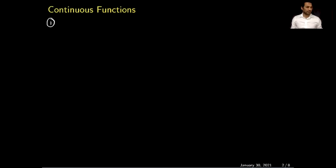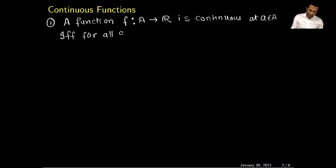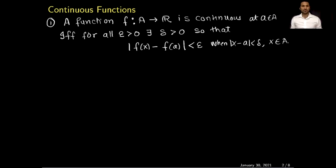What does it mean by a function is continuous at a point? A function f, which is defined from a set A, a subset of the real numbers, is continuous at a point a which is a member of the set A, if and only if for all epsilon strictly positive, we can find a delta which is also strictly positive, so that the distance between f(x) and f(a) is less than epsilon, when the distance between x and a is less than delta, and x belongs to A.